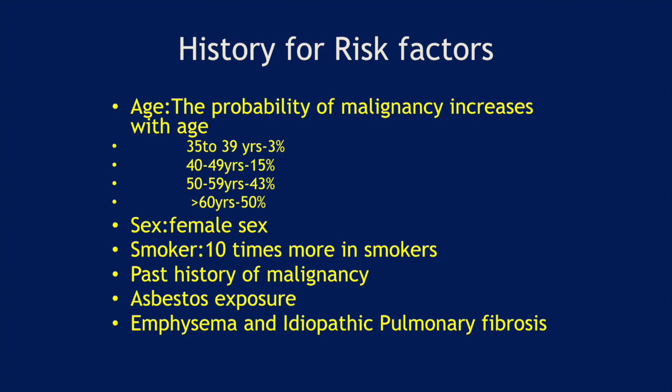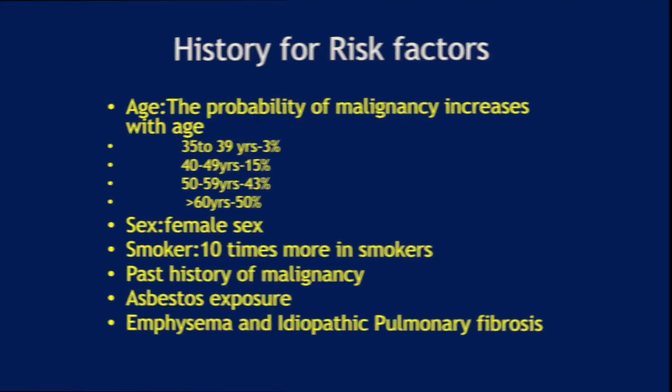Second, female sex — more prone to have malignant nodules. Third, smokers — 10 times more risk in smokers. Fourth, past history of any malignancy. Fifth, asbestos exposure. Sixth, patients having emphysema or idiopathic pulmonary fibrosis. All these patients are at risk of having malignancy.